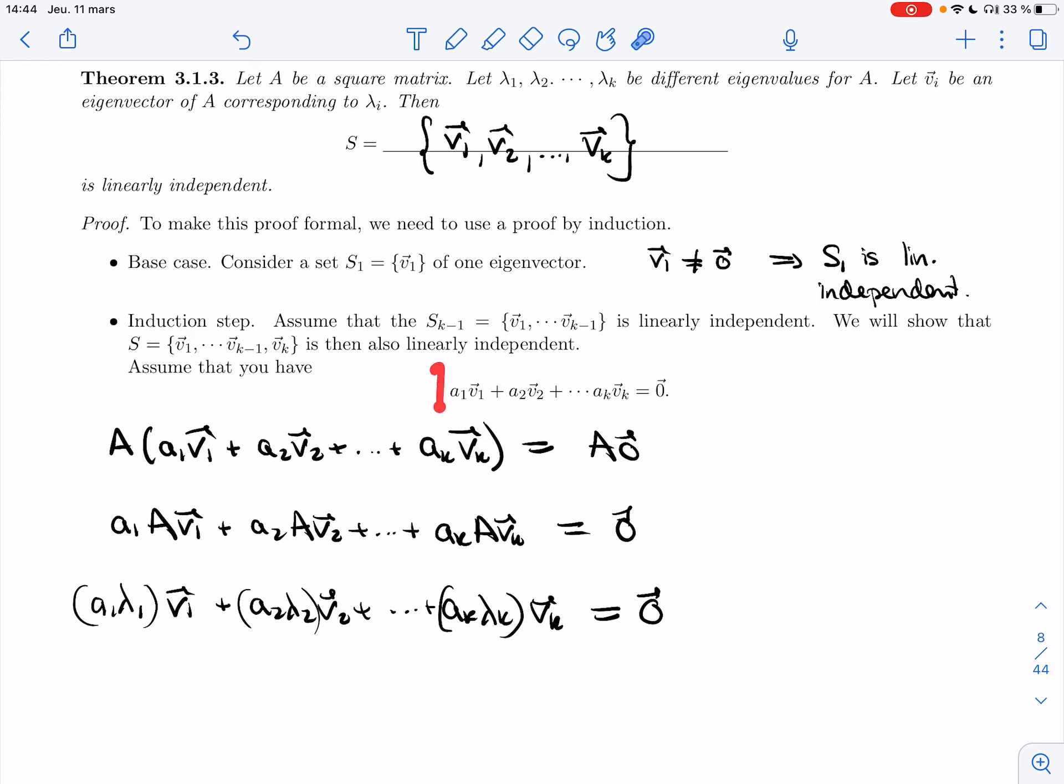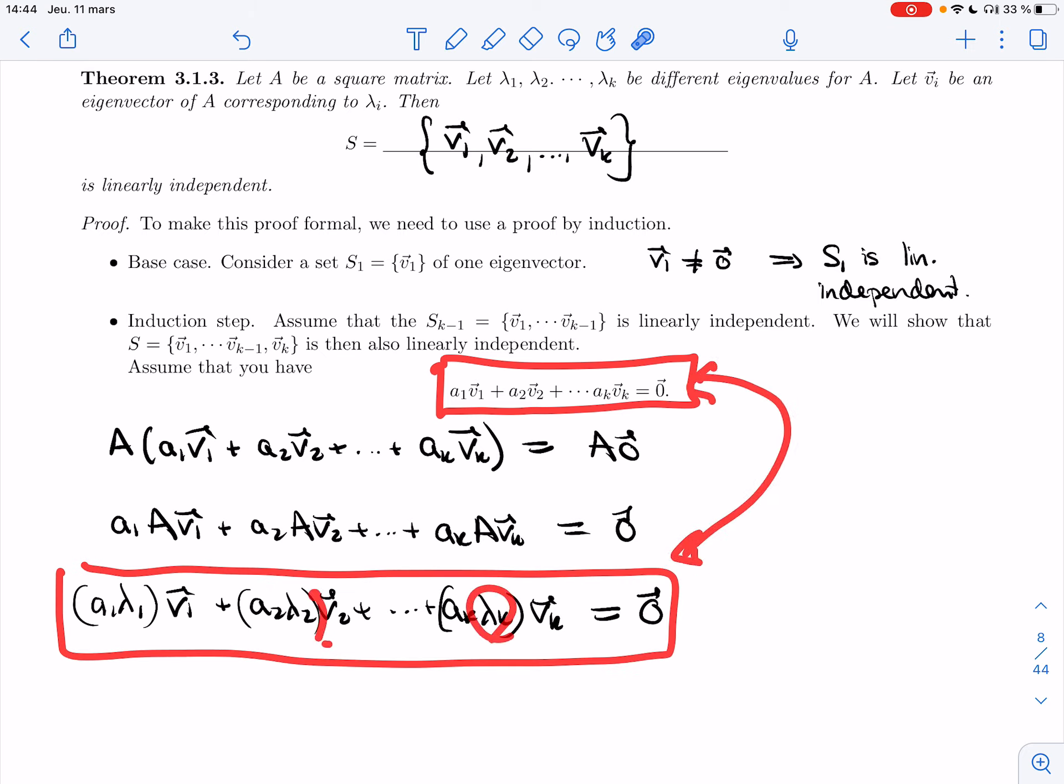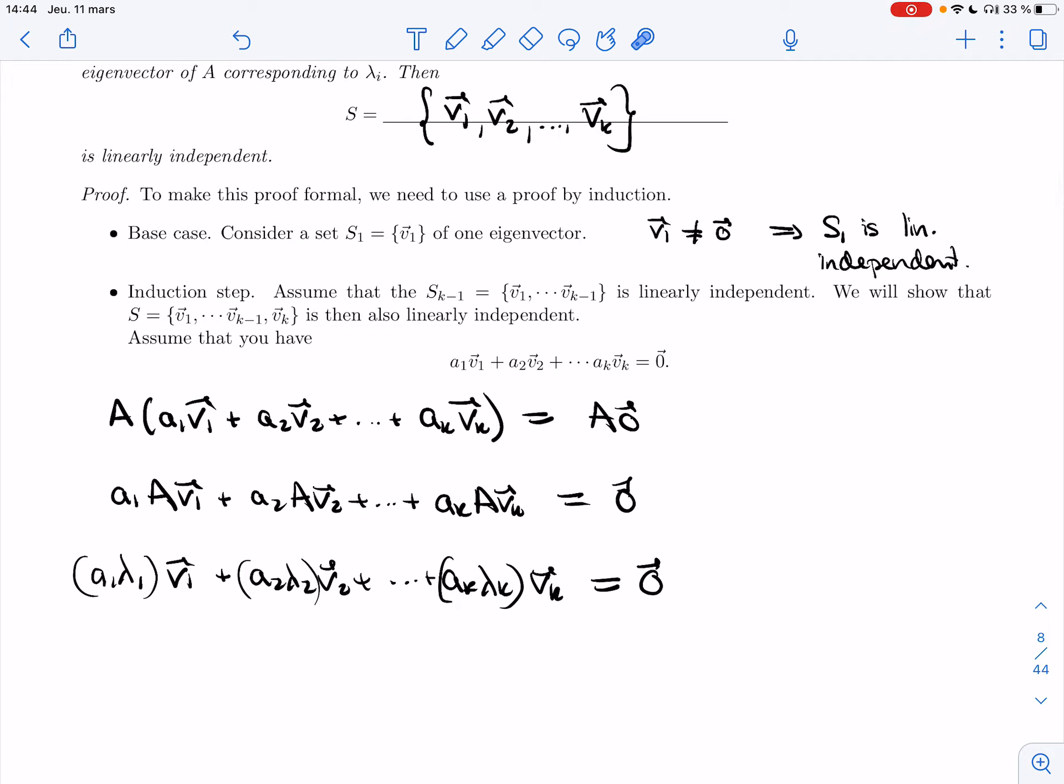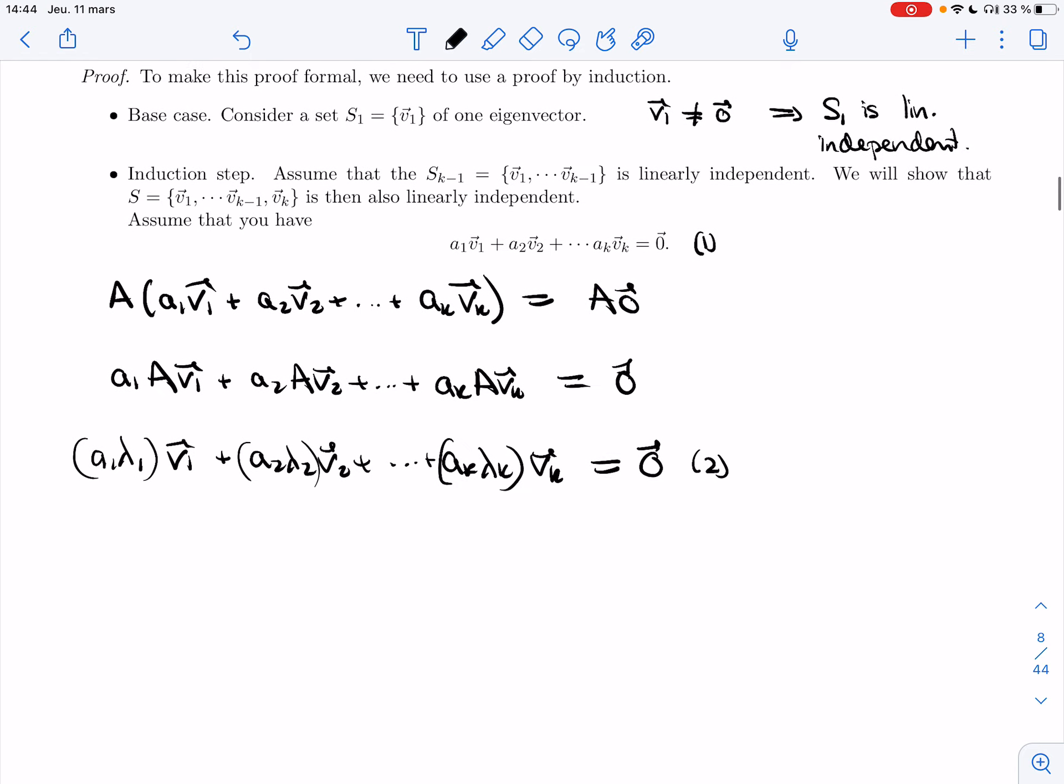Alright, so I had one linear dependence relation, and I got a second one. These two are sort of different, right? Because I'm multiplying each term by a different number. And so I can play them off each other. I want to play them off to cancel the v_k's. And so I'm going to take the second one minus lambda_k times the first one.